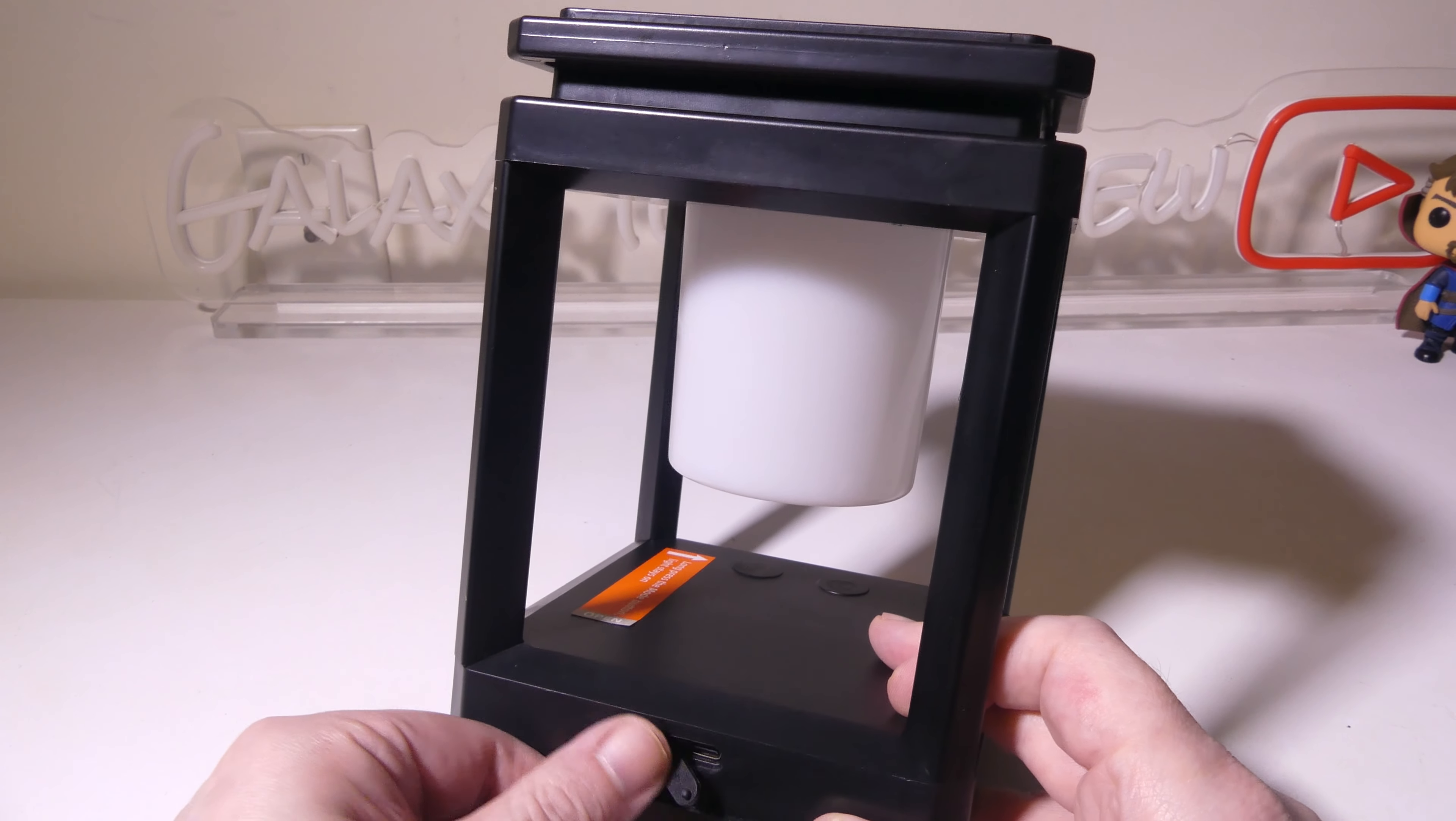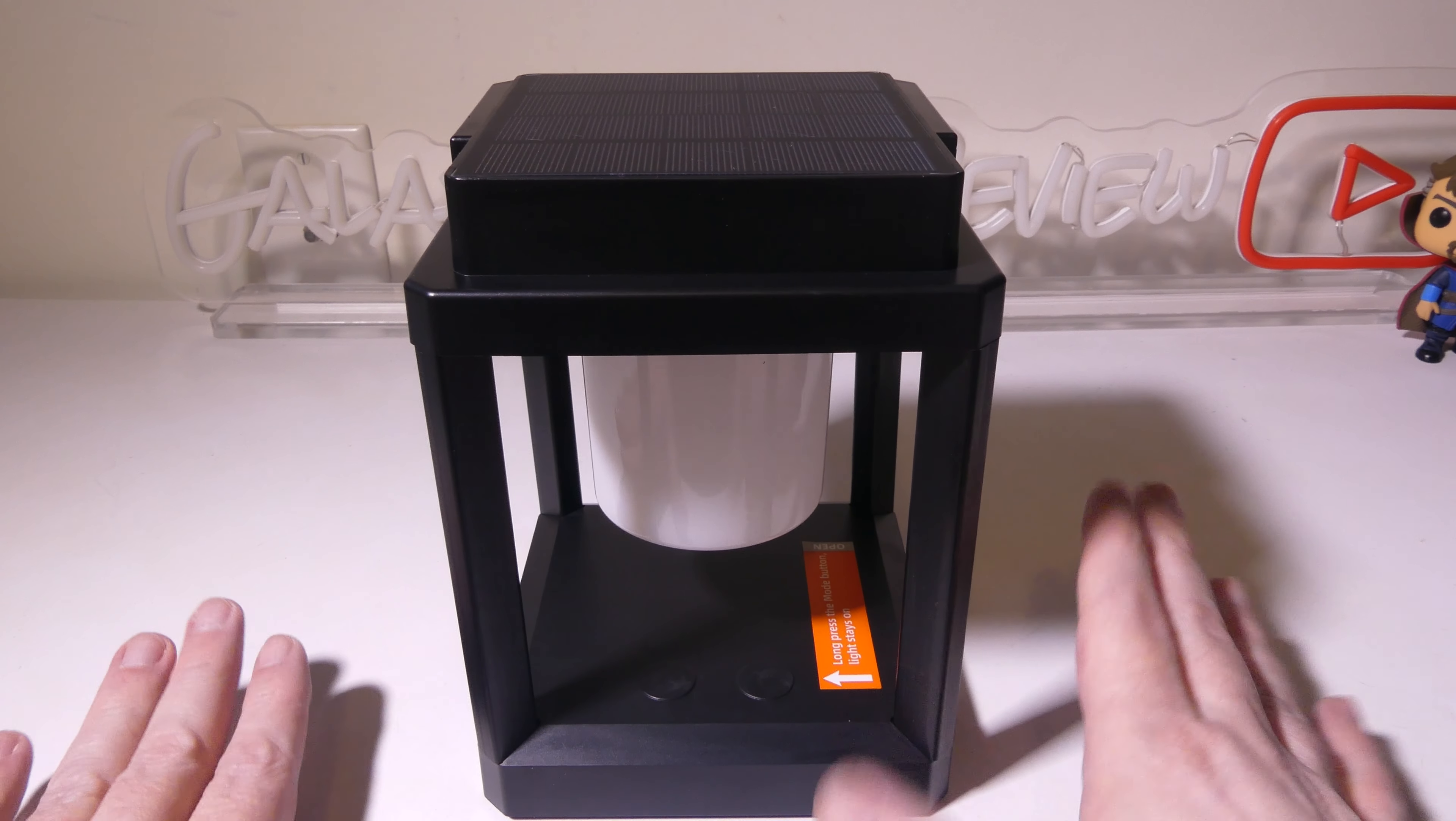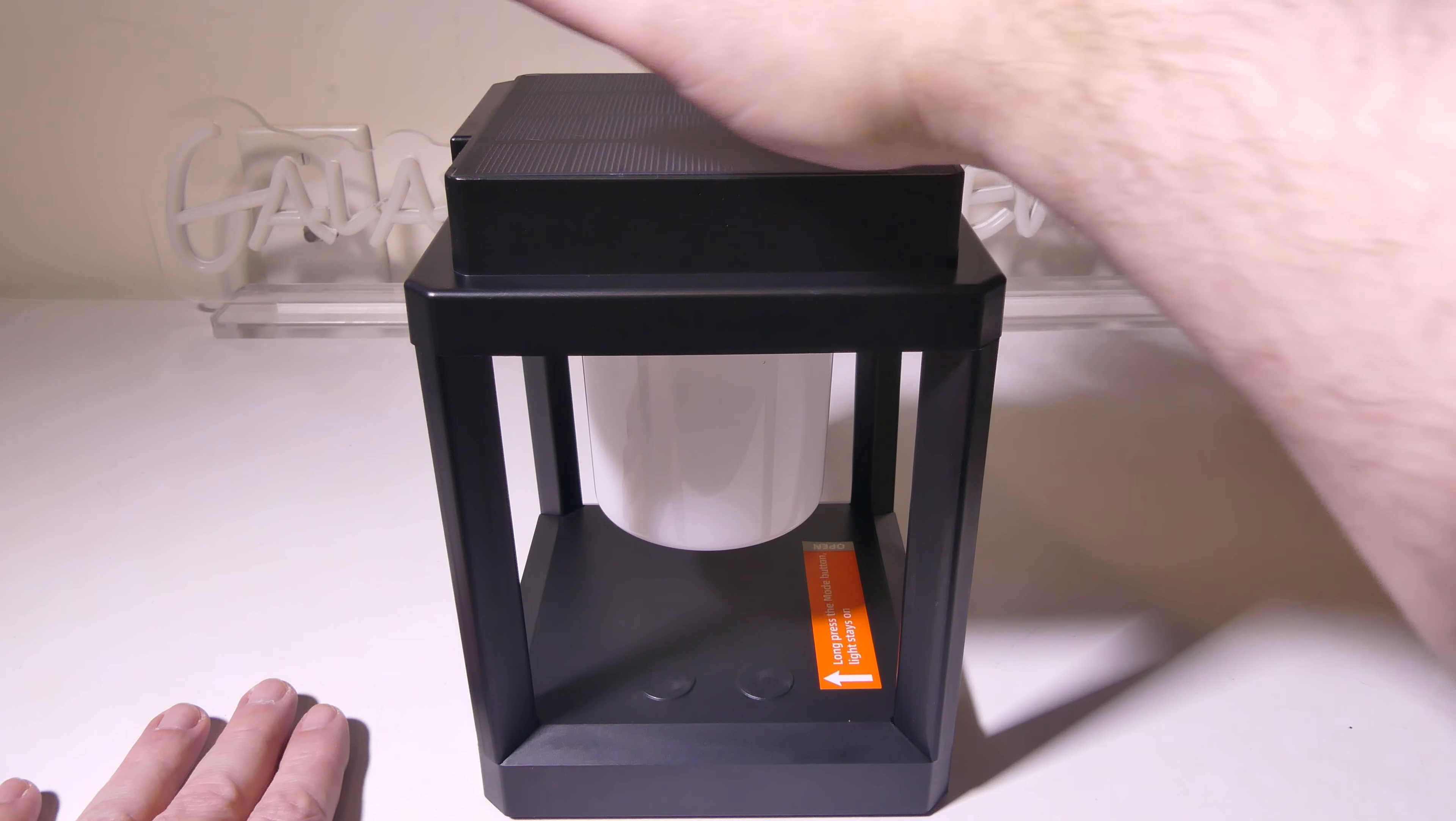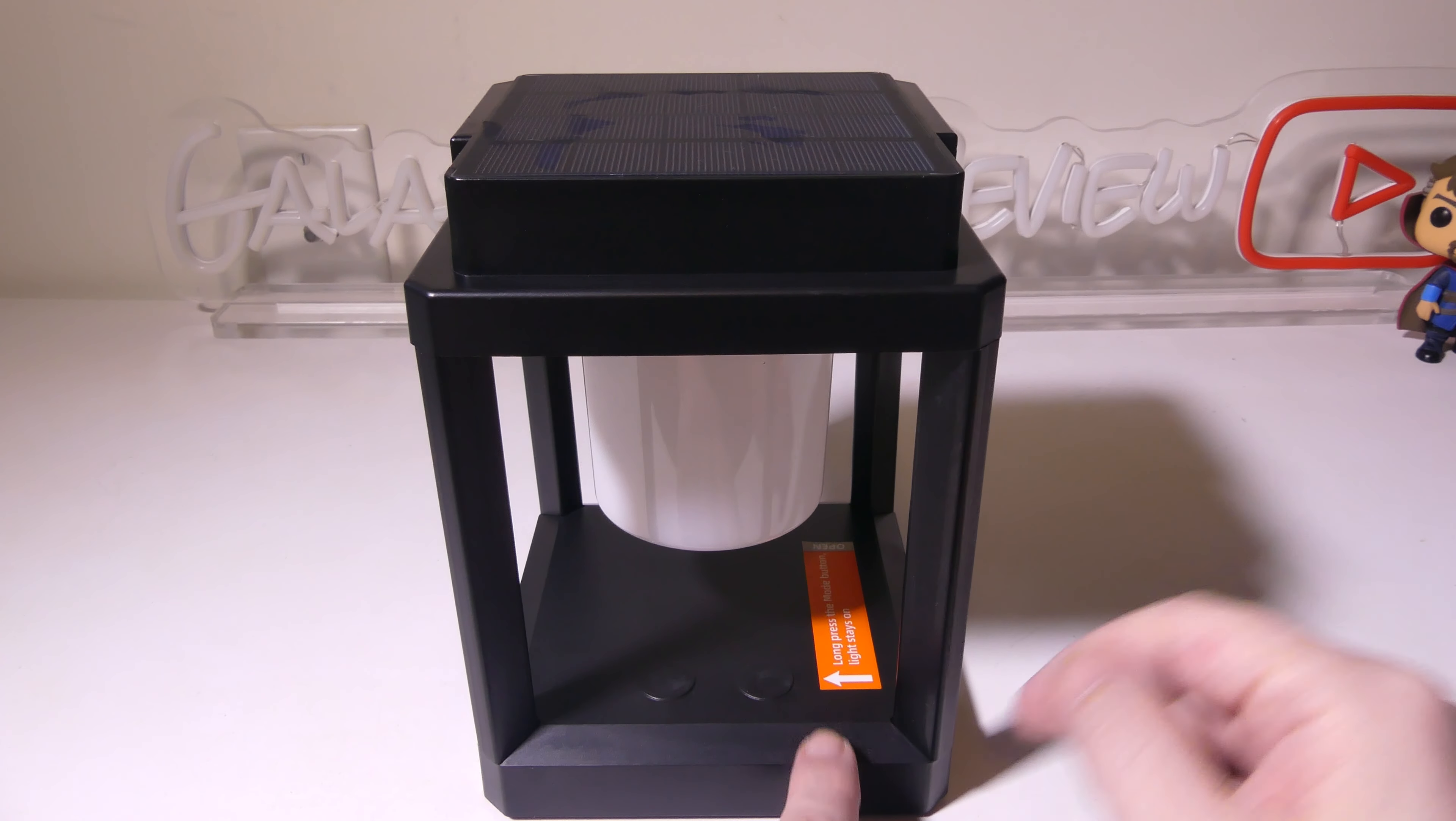So, that's just a secondary way to charge this in case of emergencies, but obviously, the solar portion of this is going to pretty much keep it topped up at all times as long as you have light here. Default mode is going to be sensing mode. That means that when the solar panel does not sense light, it will automatically turn on the LED lantern, which is great. If it goes from daytime to nighttime, it will automatically turn on.